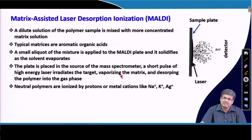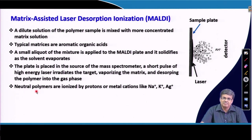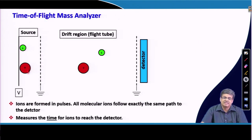Once the matrix vaporizes, it carries the polymer that was immersed in it into the vapor phase. In the vapor phase, the matrix separates from the polymer molecules, leaving the polymer molecules in the vapor phase. The polymer molecules need to be charged so that they can move under an electric field. Neutral polymers are ionized by protons or small cations like sodium, potassium, or silver ions. Once these charged molecular ions are generated, a detector is applied and the time it takes to move from the source to the detector is measured — this is the time of flight.